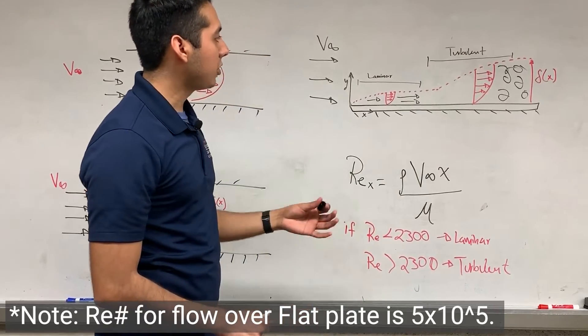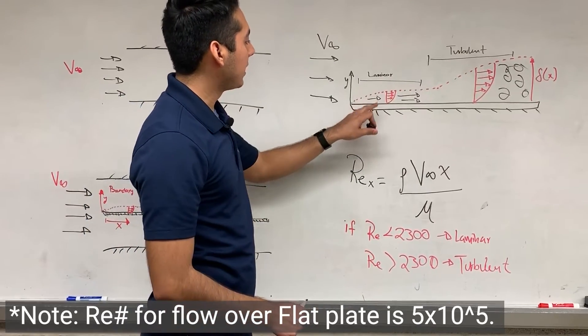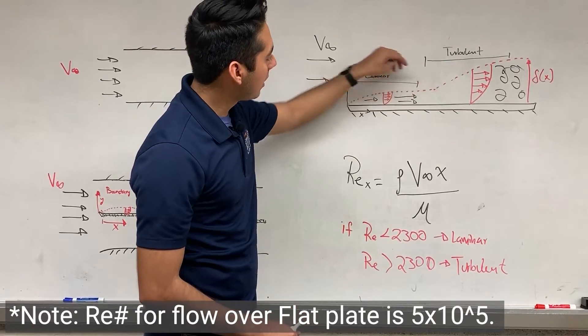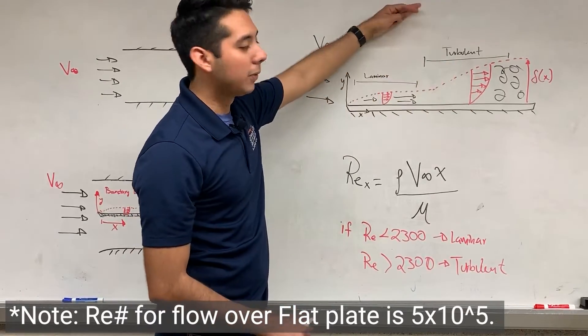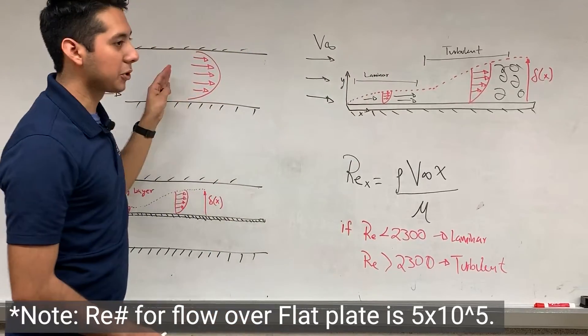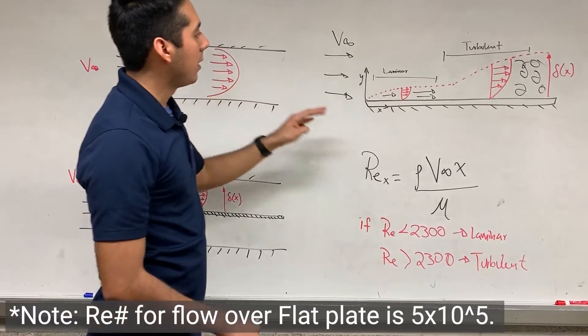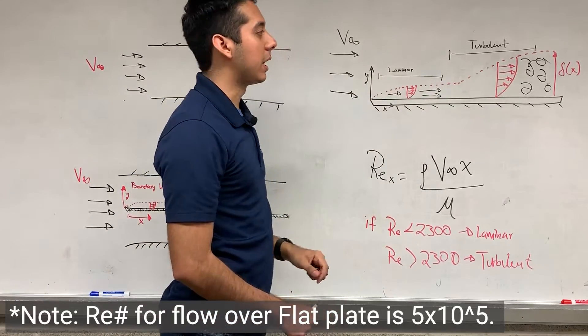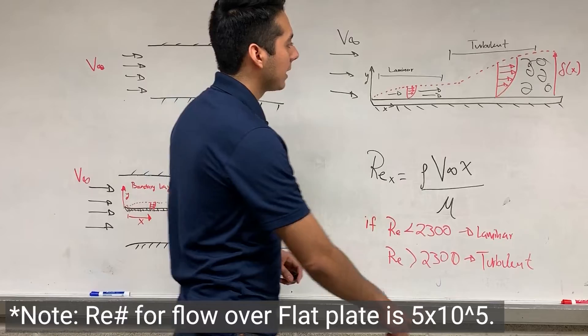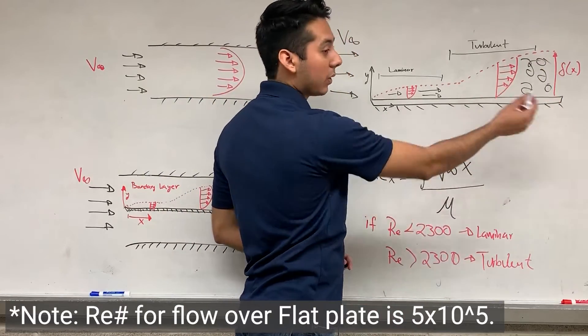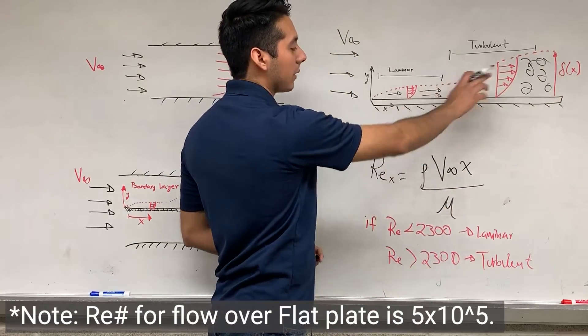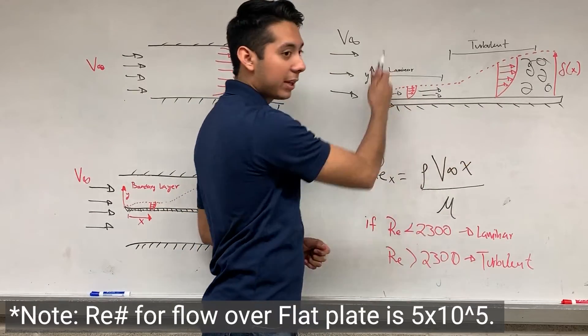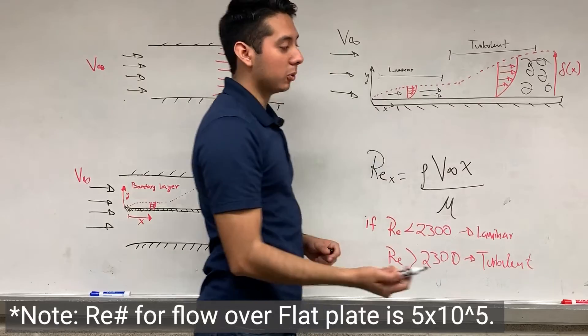What you guys are trying to measure in this lab is the height of this boundary layer. So all the fluid above this layer will flow smoothly, will flow like every other fluid we have measured so far, just like this shape. But over here really close, we will have this layer. So you guys will be measuring the height of this layer at different lengths. This is a function of length. The farther away you are from the entrance of the duct, the higher your boundary layer will be.